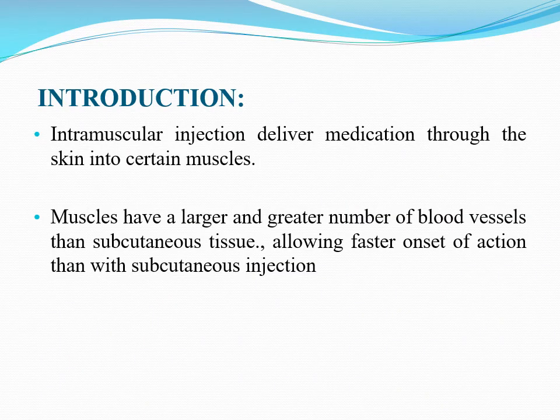Introduction: Intramuscular injection delivers medication through the skin into certain muscles. Muscles have a larger and greater number of blood vessels than subcutaneous tissue, allowing faster onset of action than with subcutaneous injection.